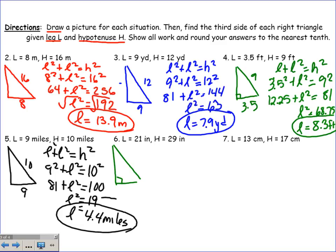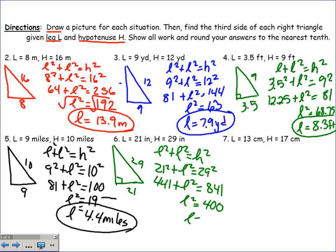Next one here, we have a right triangle. This is 29, this is 21. 21 squared plus L squared equals 29 squared. That's 441 plus L squared equals 841. When I subtract 441 from both sides, I have L squared equals 400, so L just equals 20 inches.